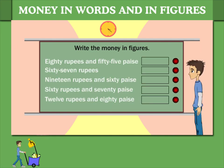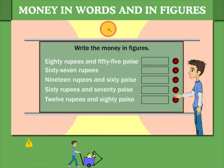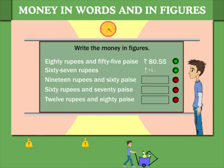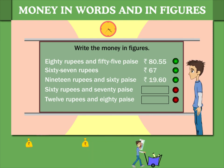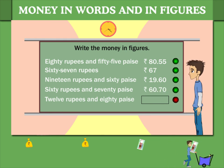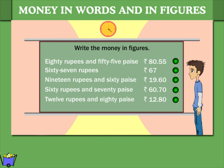Now there are words and Sammy shows how they are written in figures: 80 rupees and 55 paise, 67 rupees, 19 rupees and 60 paise, 60 rupees and 70 paise, 12 rupees and 80 paise.